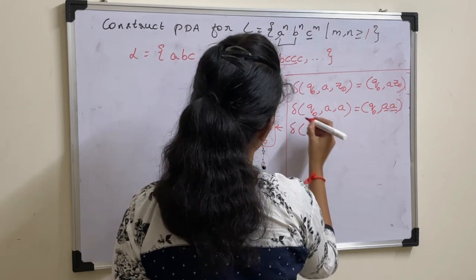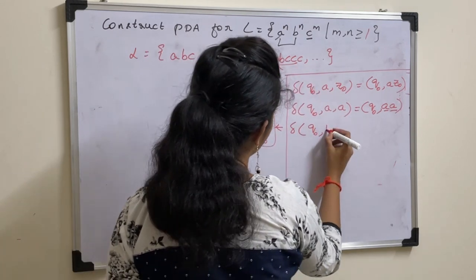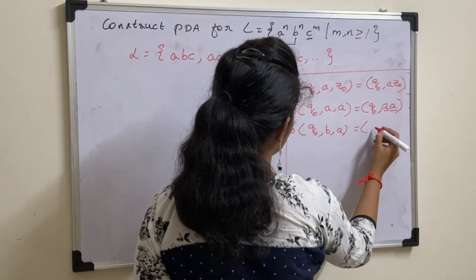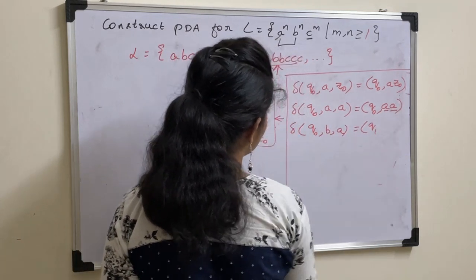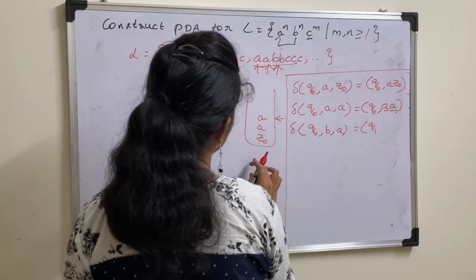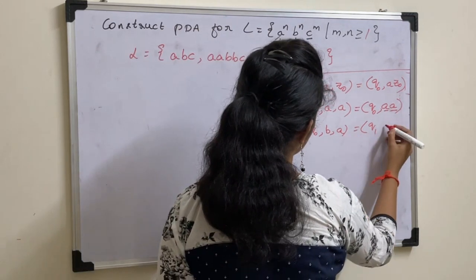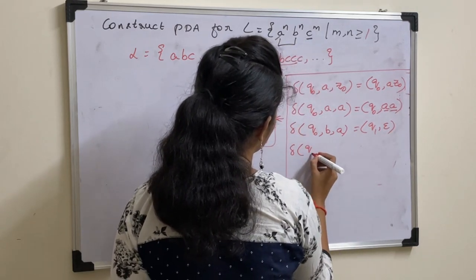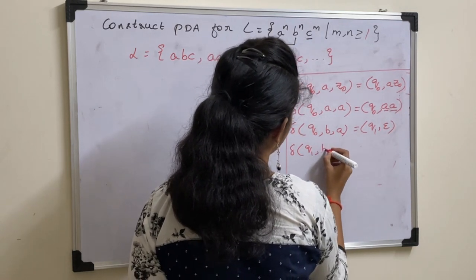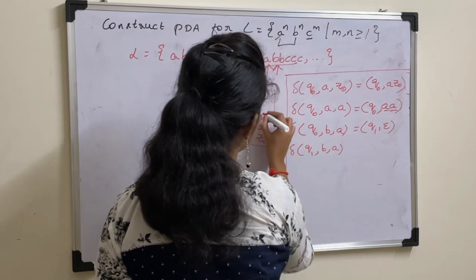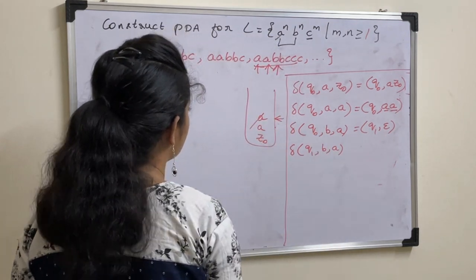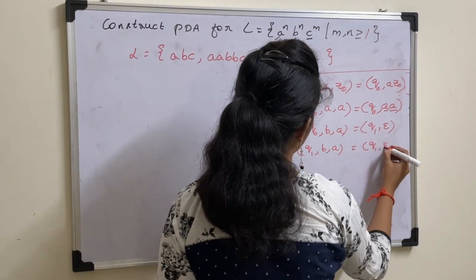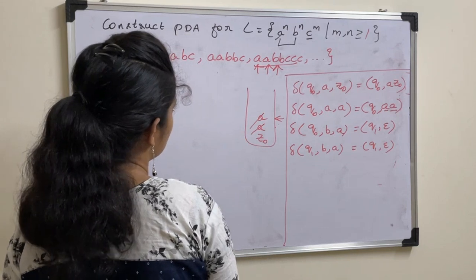Next, delta of (Q naught, B, A): if the input symbol is B and the top of the stack is A, then change state and perform a pop operation — pop this A. Now for delta of (Q1, B, A): this is already popped with the previous transition function. Q1, B, A again gives Q1 with a pop operation, popping the 2nd A also.